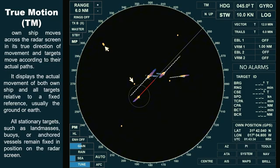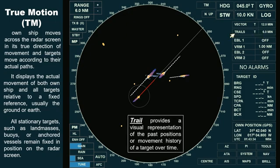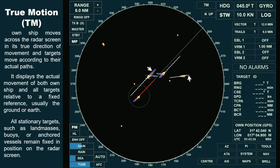In this radar display, the trail function is switched on and set to a six-minute time frame. A trail provides a visual representation of the past positions or movement history of a target over time. In true motion mode, with the trail set to true, all moving objects will leave a trail behind, appearing as faint lines or tails that show where the target has been. This includes the trail of the own ship, as well as other moving objects.